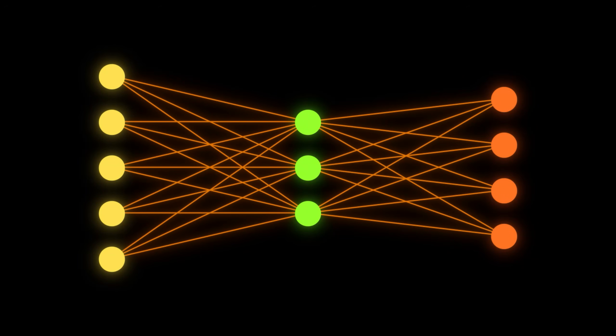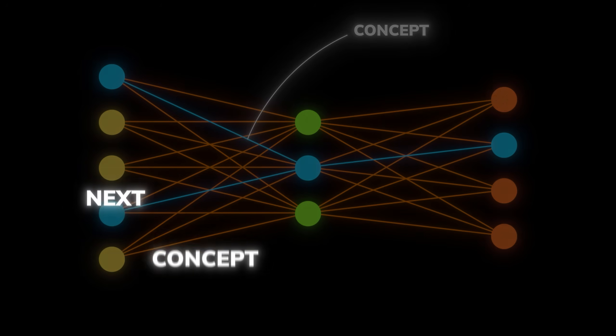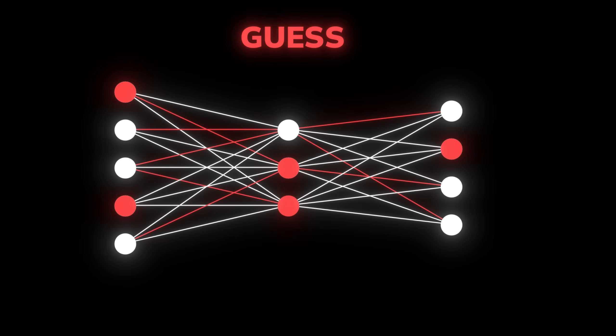So in addition to the typical pre-training process, SAE now scans the model and learns the concept that the model has, then goes under something called next concept prediction training. The logic is similar to next token prediction training, where the AI model will guess what the next concept is.